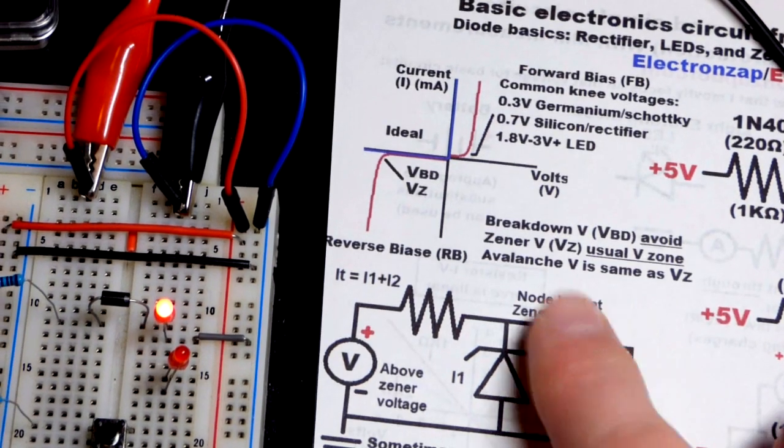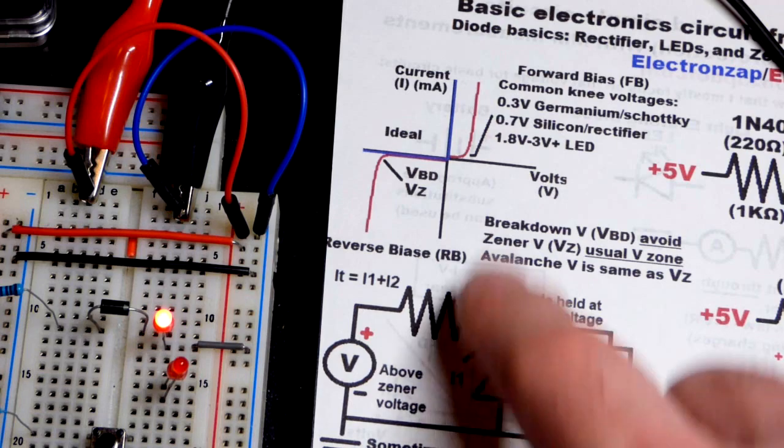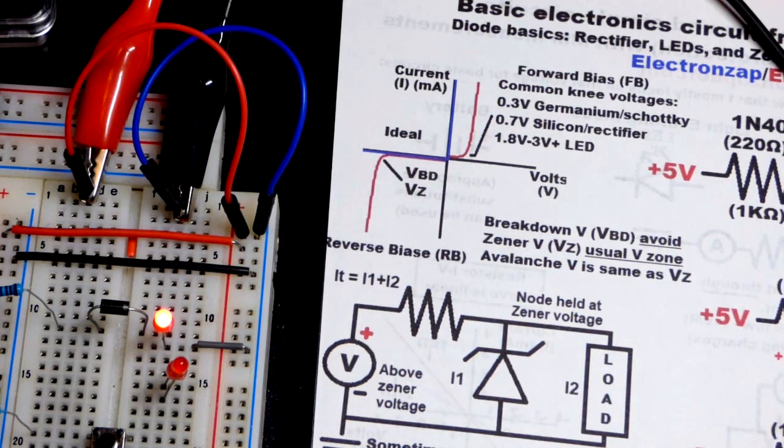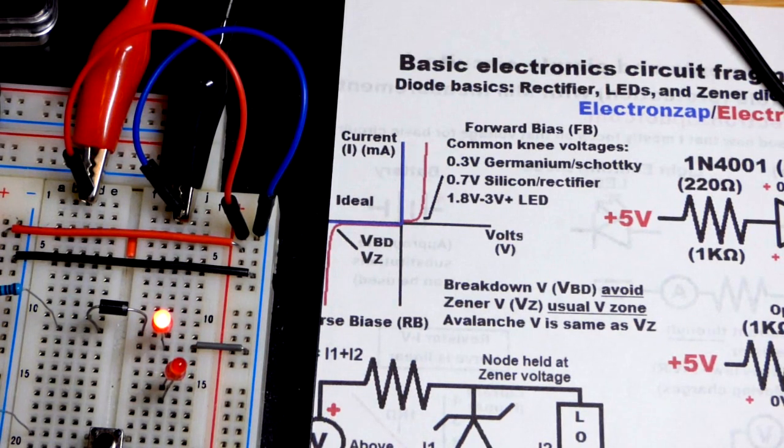There is the zener diode though. We'll look at that in the next video. They're actually made for conducting reverse biased. So again, we'll look at that in the next video. I don't want to make this one too long. So thanks for watching. I will see you in the next video.